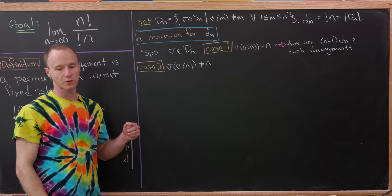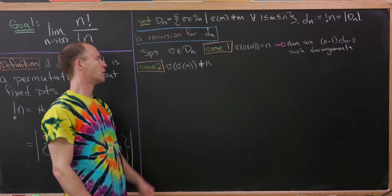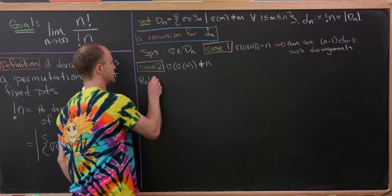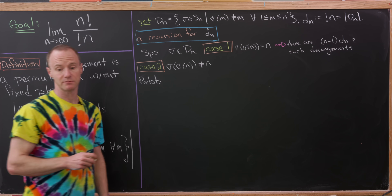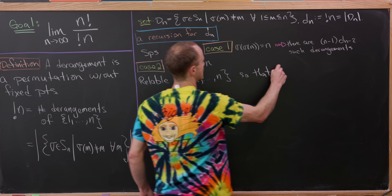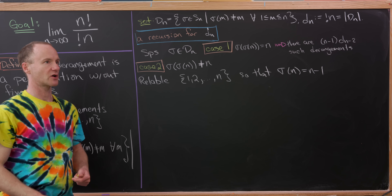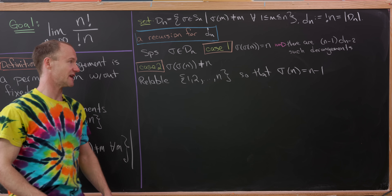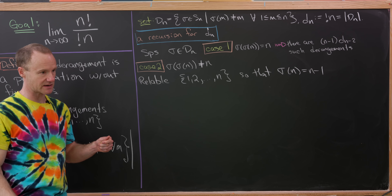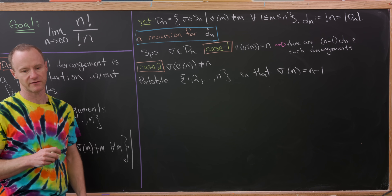Now let's move on to the second case, which is simply not the first case — that is, σ(σ(n)) ≠ n. We start with a relabeling to make the notation simpler. We relabel the numbers 1, 2, …, n so that σ(n) = n−1, keeping in mind there are still n−1 places we can send n. When we employ the multiplicative property of counting again, we'll use those n−1 choices for σ(n).